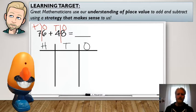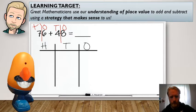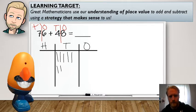Now, when adding, I always like to start with the bigger number. So let's go ahead and represent 76. So like I said, seven tens, one, two, three, four, five, six, seven, and six ones. One, two, three, four, five, six.